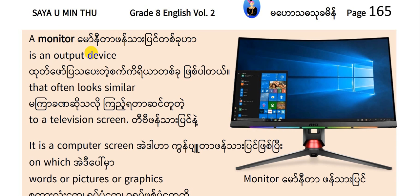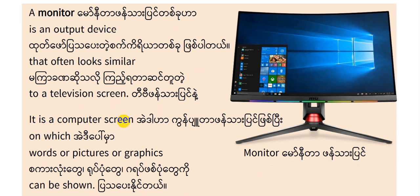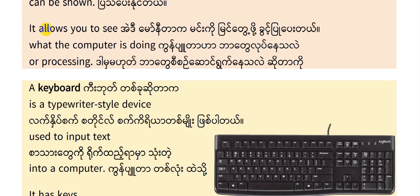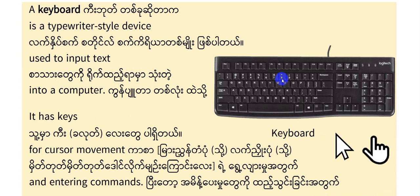A monitor is an output device that often looks similar to a television screen. It is a computer screen on which words, pictures, or graphics can be shown. It allows you to see what the computer is doing.